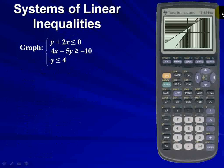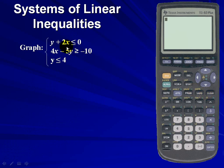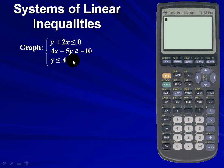For our next example, we're going to graph a system of linear inequalities with three equations. Our first equation is y plus 2x is less than or equal to 0. Our second equation is 4x minus 5y is greater than or equal to negative 10. And our last equation is y is less than or equal to 4.